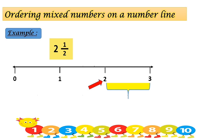The number at the bottom of the fraction is two, so we are going to divide it into two equal parts. This is one and this is two. So where is one half? The first red line is one by two — one half.